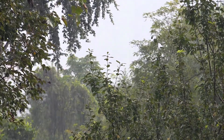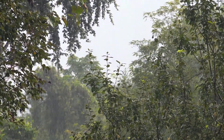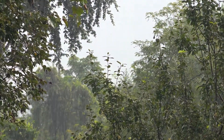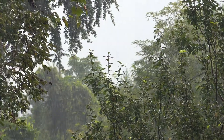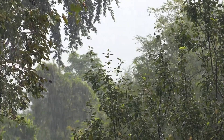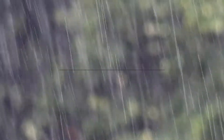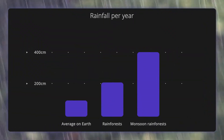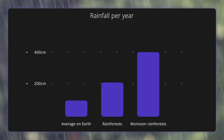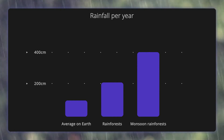Rainforests are some of the wettest and most humid places in the world. They absorb the most rainfall of all climates by a large margin. The average rainfall per year on Earth sits at around 100 centimetres, while rainforests average over 200 centimetres.